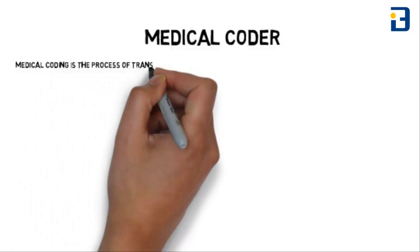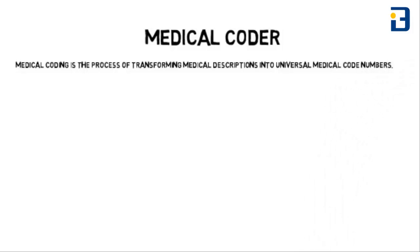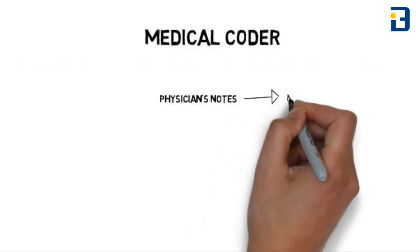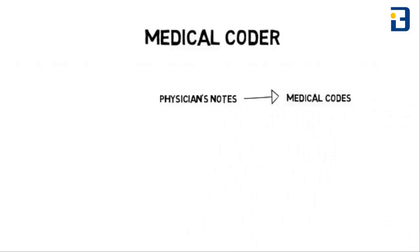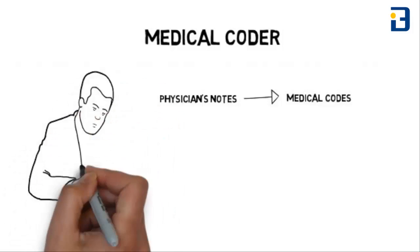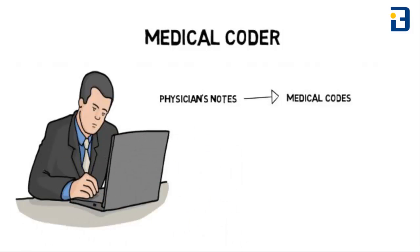Medical coding is the process of transforming descriptions of medical diagnoses and procedures into universal medical code numbers. Medical coders translate physician notes into medical codes by abstracting information such as the patient's diagnosis, procedures performed, physician's name, lab results, etc., from the documentation and then assigning appropriate codes.